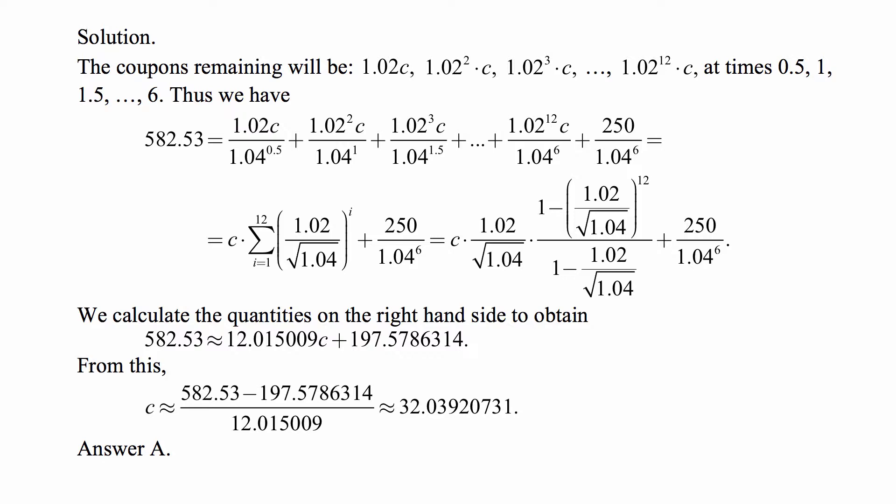If we factor out c, all the terms that have c in them can be combined into a sum from i=1 to 12 of (1.02/√1.04)^i. This is a partial sum of a geometric series, but it doesn't start with 1. It starts with 1.02/√1.04.